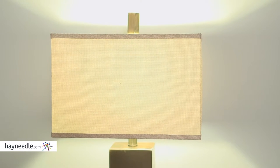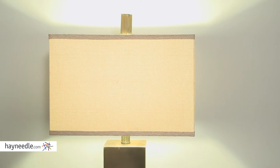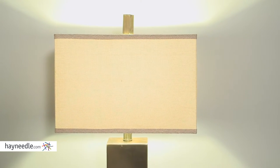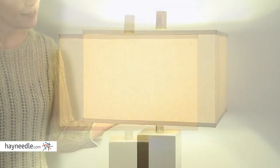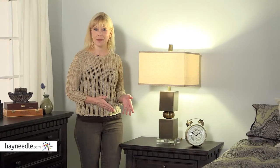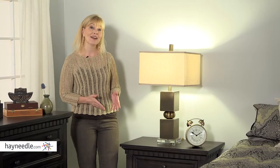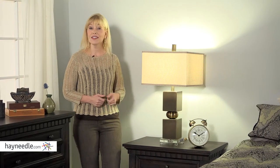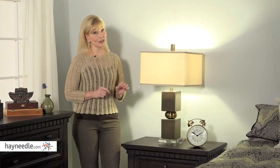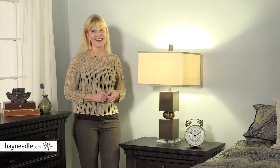The lamp features a large coordinating fabric rectangular shade that will give off the perfect glow. The three-way on-off switch is located here. The Catalina Lighting Table Lamp requires a 150 watt incandescent bulb or CFL equivalent, which is not included but can also be found at Hayneedle.com.